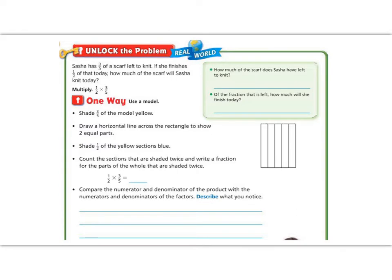Let's begin by reading the unlock the problem. It says, Sasha has three fifths of a scarf left to knit. If she finishes one half of that today, how much of the scarf will she knit today? Let's look to our green box to get us started. How much of the scarf does Sasha have left? It told us that she has three fifths left. Of the fraction she has left, how much will she finish today? It tells us she has one half of that to finish. So we are going to be multiplying one half times three fifths.